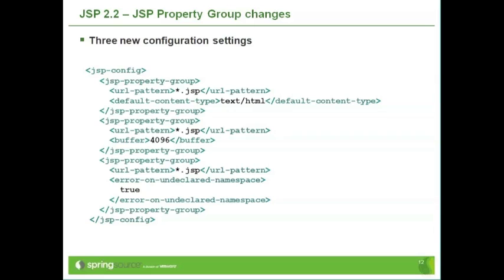If you turn on error on undeclared namespace, then what will happen is that if you try and use a tag in a JSP page that isn't declared, that will actually throw a compilation exception and you'll see that error straight away. So it makes that particular class of error more obvious and therefore easier to debug.